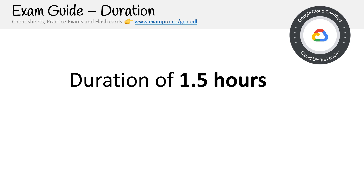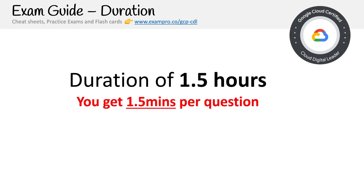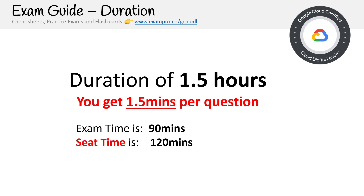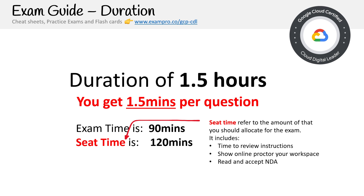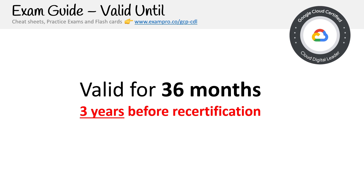For duration, you get 1.5 hours. A lot of other providers give you only an hour, so I really appreciate the extra time — I cleared it within 30 minutes, but if this is your first time, you'll likely need the full time. Make sure you utilize all available time when taking the exam. You get 1.5 minutes per question, whereas other providers only give one minute. The exam time is 90 minutes and the seat time is 120 minutes — seat time refers to the total time you should allocate, including reviewing instructions, showing your workspace to the online proctor, reading and accepting the NDA, completing the exam, and providing feedback at the end. If you're taking it online, show up early and make sure your laptop is plugged in. The certification is valid for three years — AWS used to have two years (they may have extended the CCP to three), and Azure certifications last forever, but three years is reasonable.